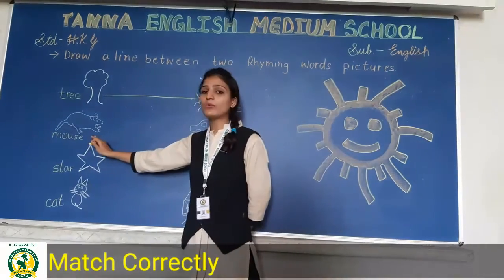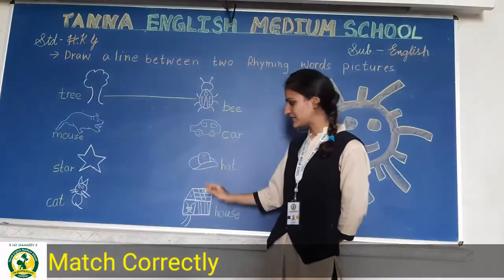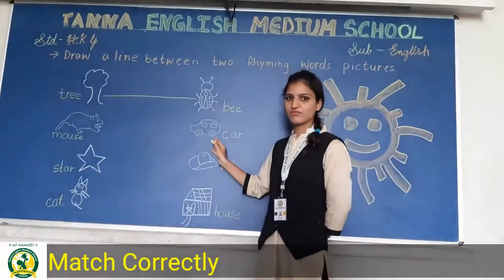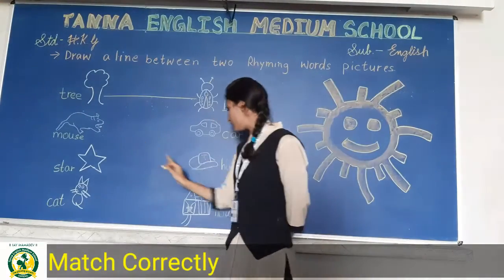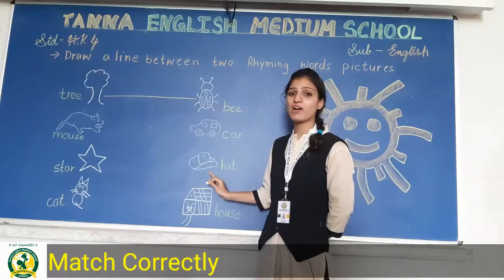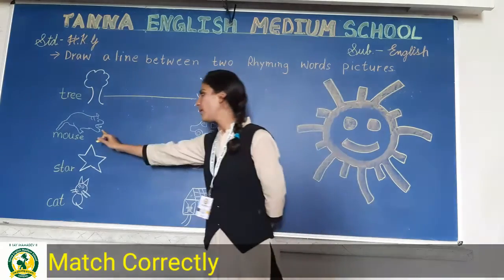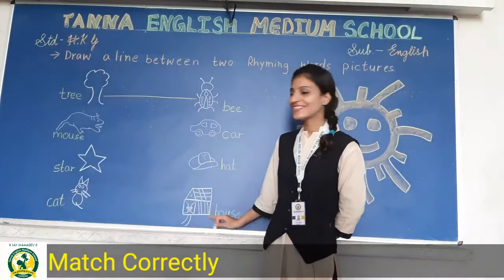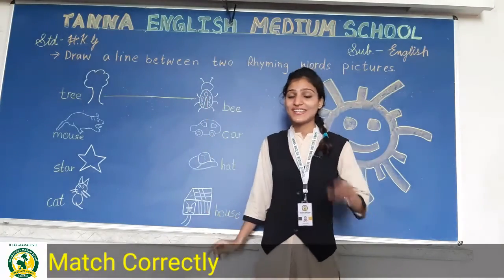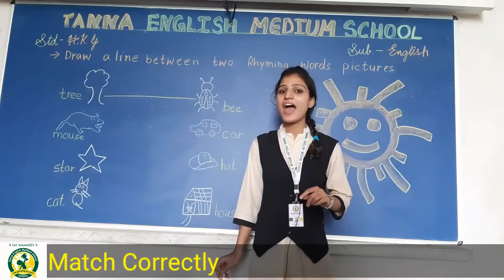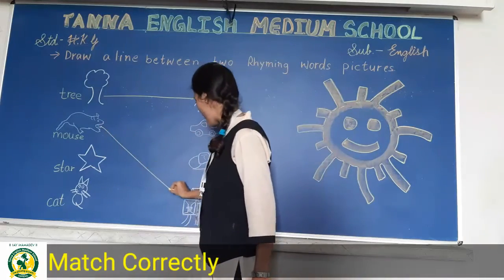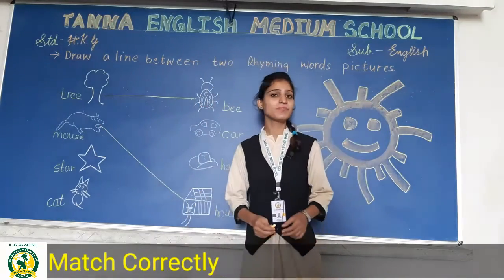अभी next देखो — mouse. Mouse का हम किसके साथ rhyme करेंगे? Mouse, car — no. Mouse, hat — same rhyme नहीं कर रहा है ना? Mouse, house — देखो, same rhyme किया! Mouse, house — तो आपको mouse को house के साथ match करना है.